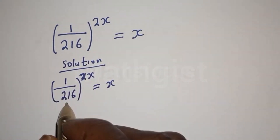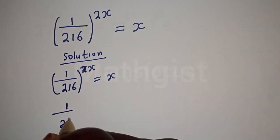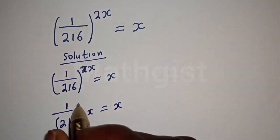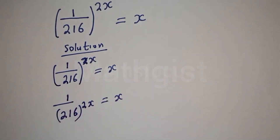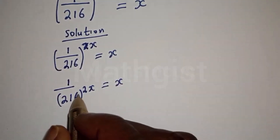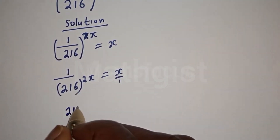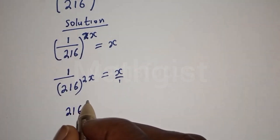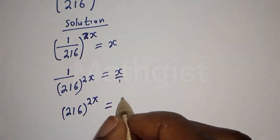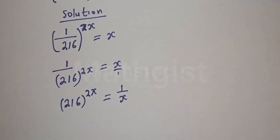This is the same as one over 216 raised to power 2x equals x, because one raised to any power is still one. Now let's find the reciprocal: we get 216 raised to power 2x is equal to one over x.